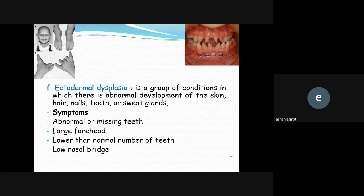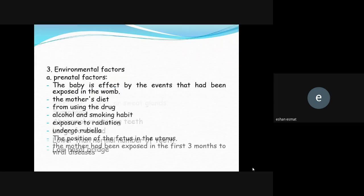Ectodermal dysplasia is a group of conditions involving abnormal development of the skin, hair, and nails. Patients may have missing fingers, problems with sweat glands, abnormal or missing teeth, a large forehead, a lower than normal number of teeth, and a low nasal bridge.